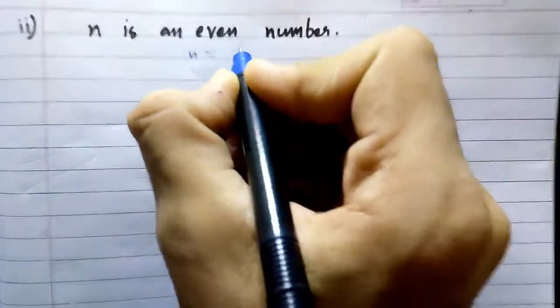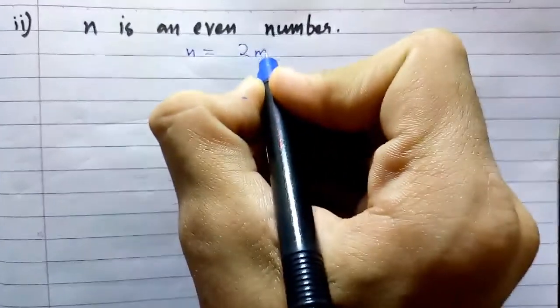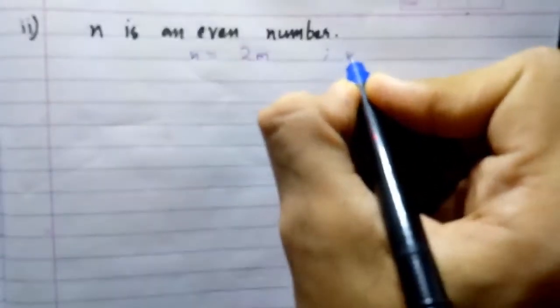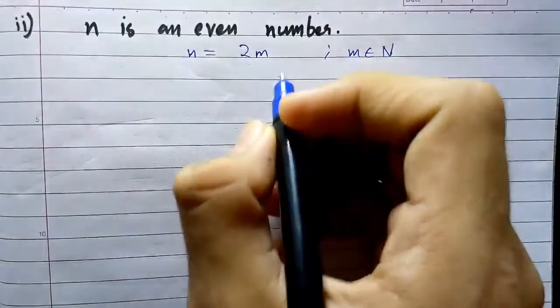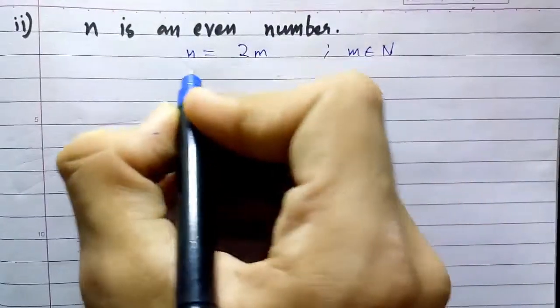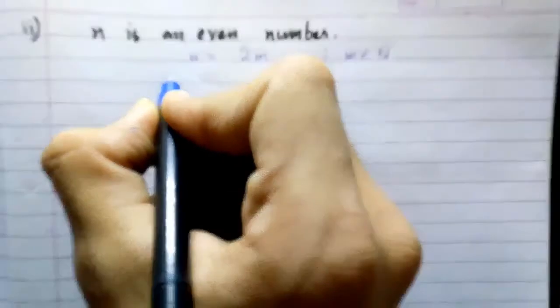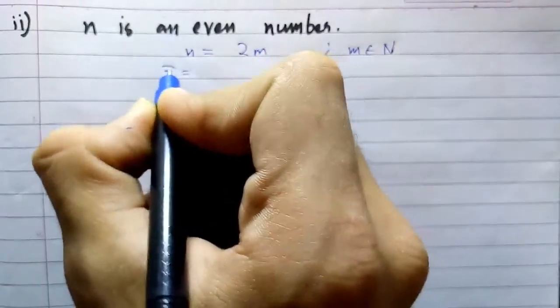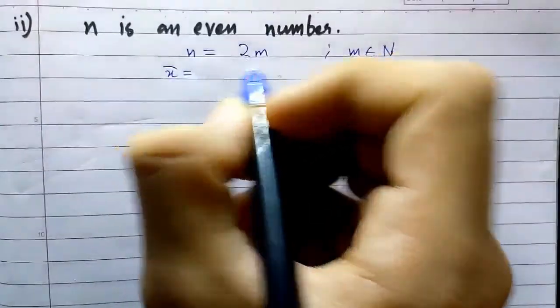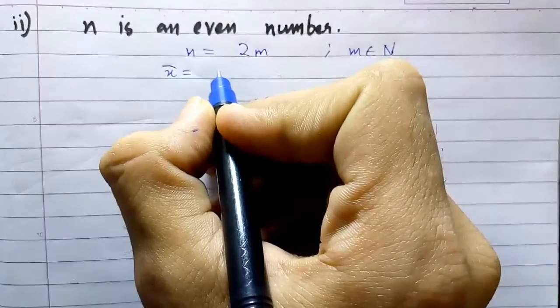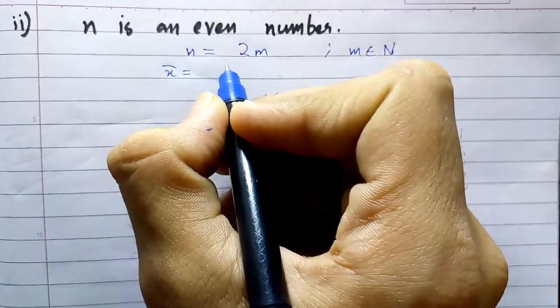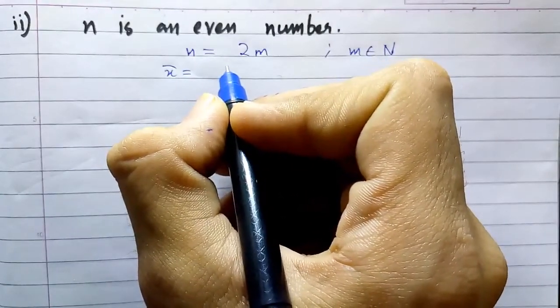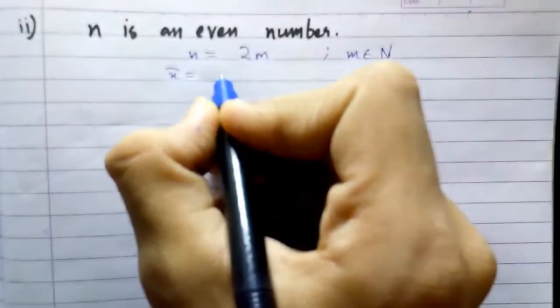Let n equals 2m, where m is any natural number. We can directly write the mean of n natural numbers is sum of n natural numbers divided by n terms.